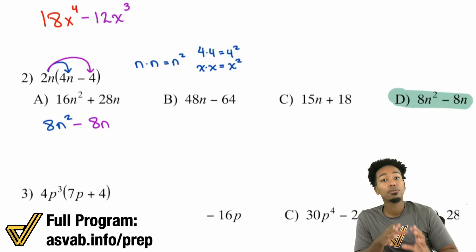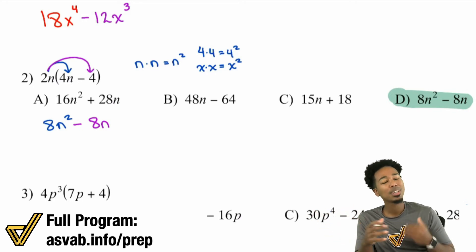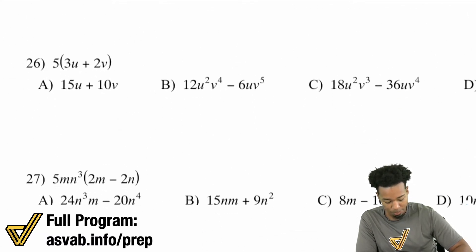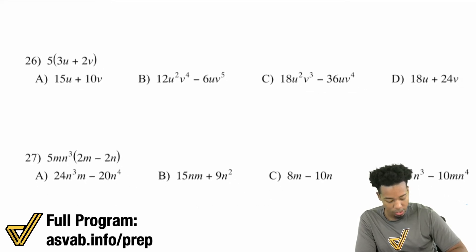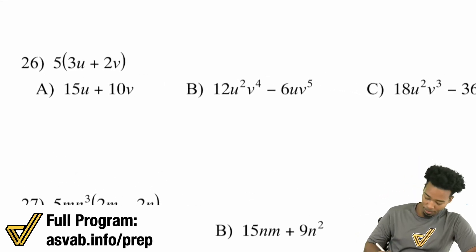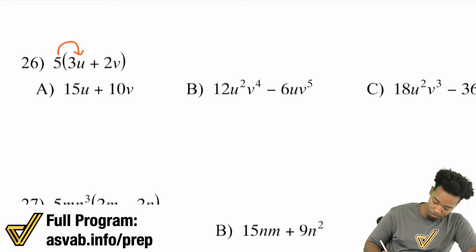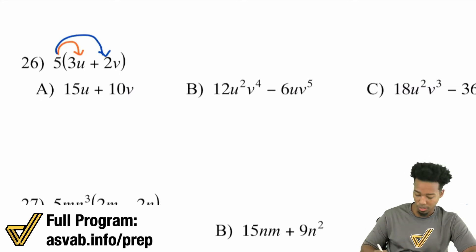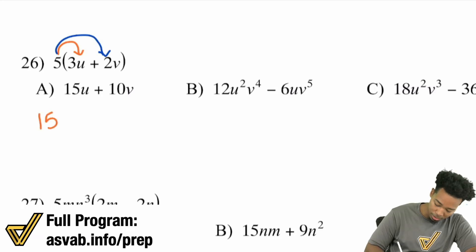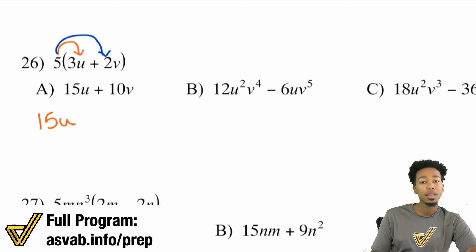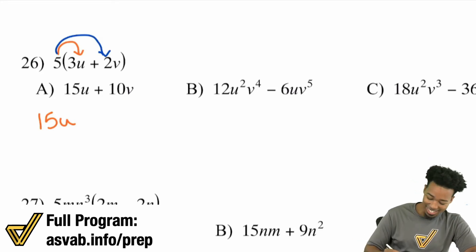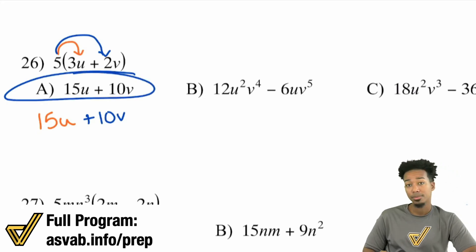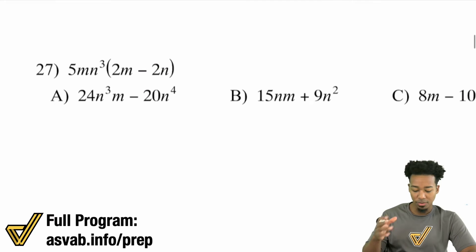Now let's get a little more complicated. I'm going to show you four different types of problems. Number 26: five distributed to three U and five distributed to two V. Five times three is 15, and you keep the U — so 15U. Then five times two is 10, and you keep the V — so 10V. The answer is 15U plus 10V. Notice we now have separate, different variables, but we just follow the same rules.